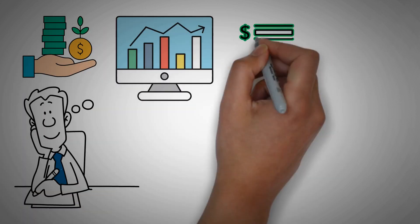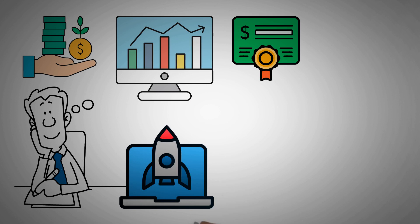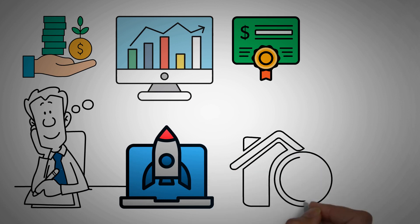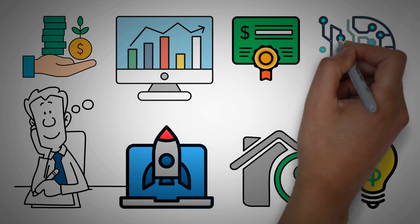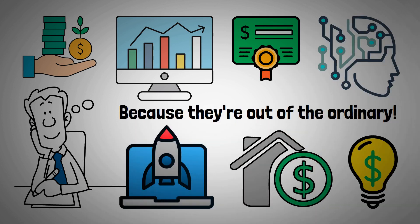Let's say you're thinking about investing. AI might point you to the usual stocks and bonds, but what about that quirky startup or an unconventional real estate deal? These could be golden opportunities, but AI might not flag them because they're out of the ordinary.